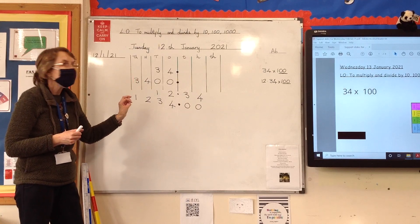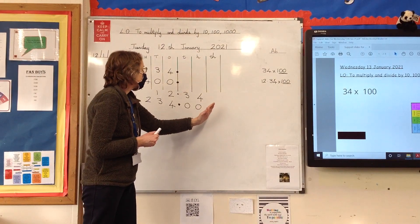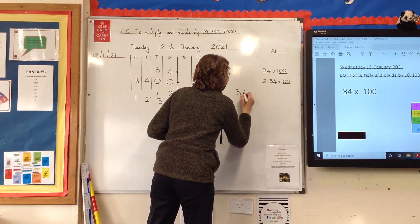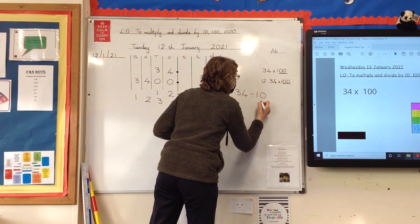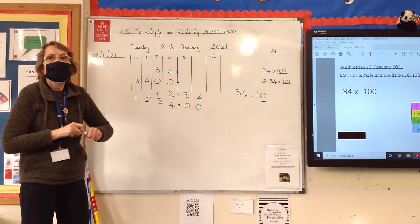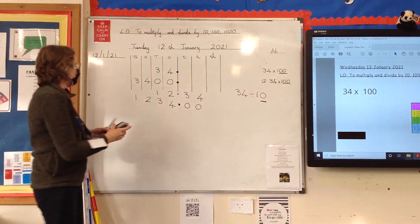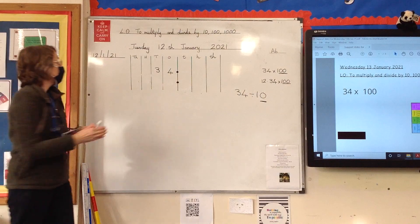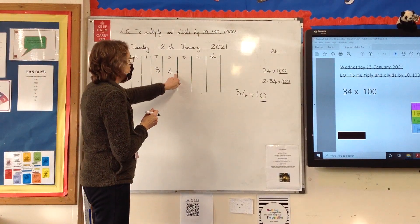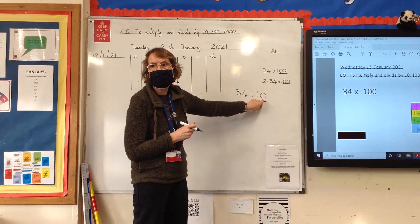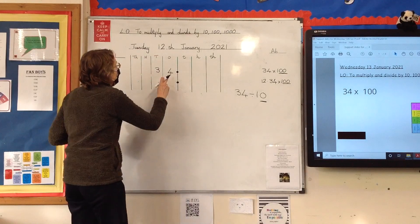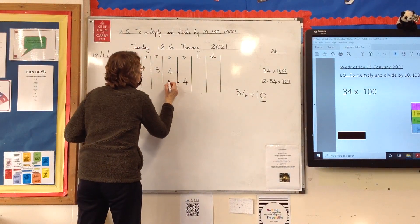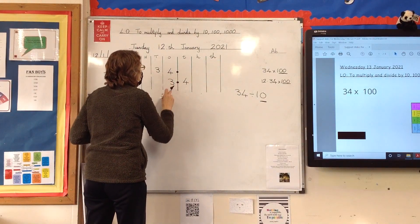When we divide, we take everything in the other direction and look at the number of zeros again. If we wanted to divide 34 by 10, how many places am I going to move that 34? One zero, one place. The decimal point doesn't move; everything moves one place this time because there's one zero, and we're going in the other direction to make it a smaller number. The four ones become four tenths, and the three tens become three ones. So that 34 becomes 3.4.